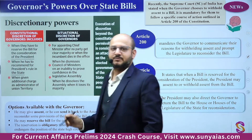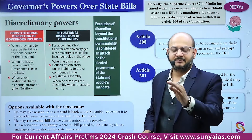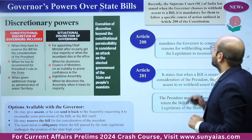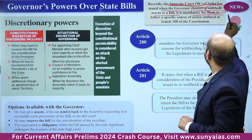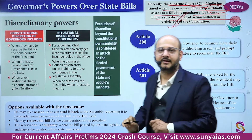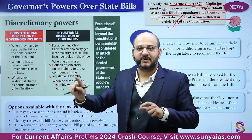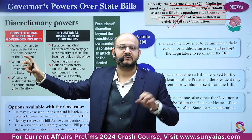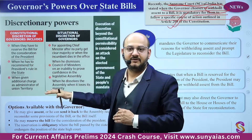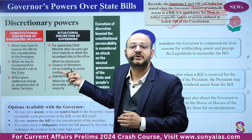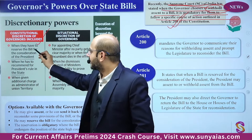The next topic is the Governor's power over state bills. The Supreme Court recently stated that when a Governor chooses to withhold assent to a bill, it is mandatory to follow the specific course of action outlined in Article 200. Governors have two types of discretionary powers: constitutional discretionary powers and situational discretionary powers — an important distinction for examination questions.